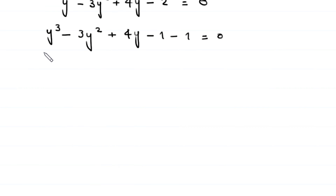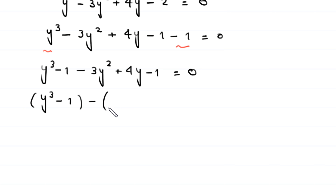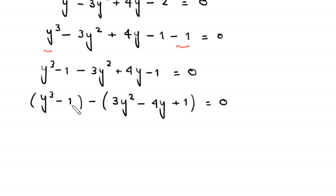We use parentheses to create two groups. We combine y³ and −1 to get (y³ − 1), and the remaining terms −3y² + 4y − 1 = 0. We then write this as (y³ − 1) − (3y² − 4y + 1) = 0, where the negative sign flips the signs inside the second bracket.